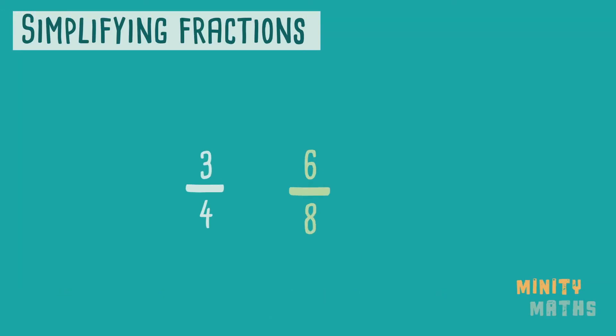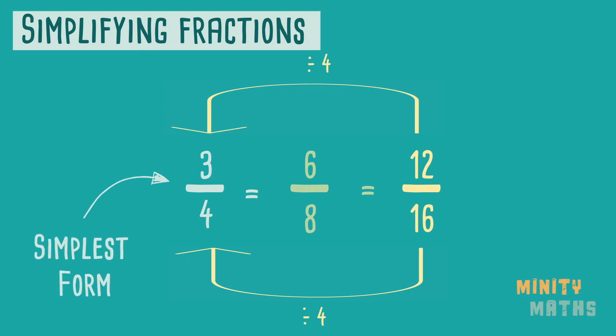We can also find equivalent fractions by dividing. This is slightly trickier as we have to find a number that divides by both the numerator and denominator. Let's take a look at our original example. Here we can divide 12 over 16 by 2 or even by 4 to get an equivalent fraction. Here we are actually simplifying the fraction and the process is called cancelling down. Once we can no longer cancel the fraction down we can say it is in its simplest form.